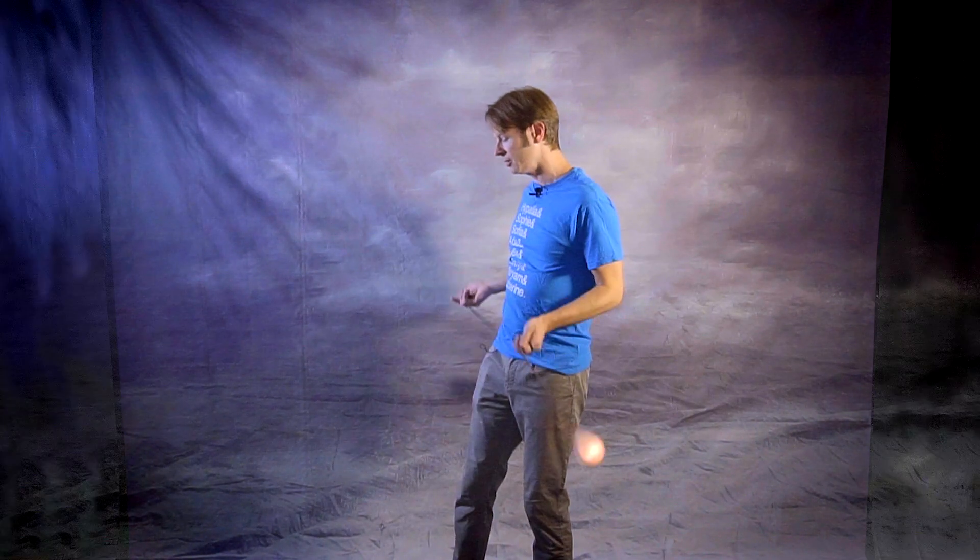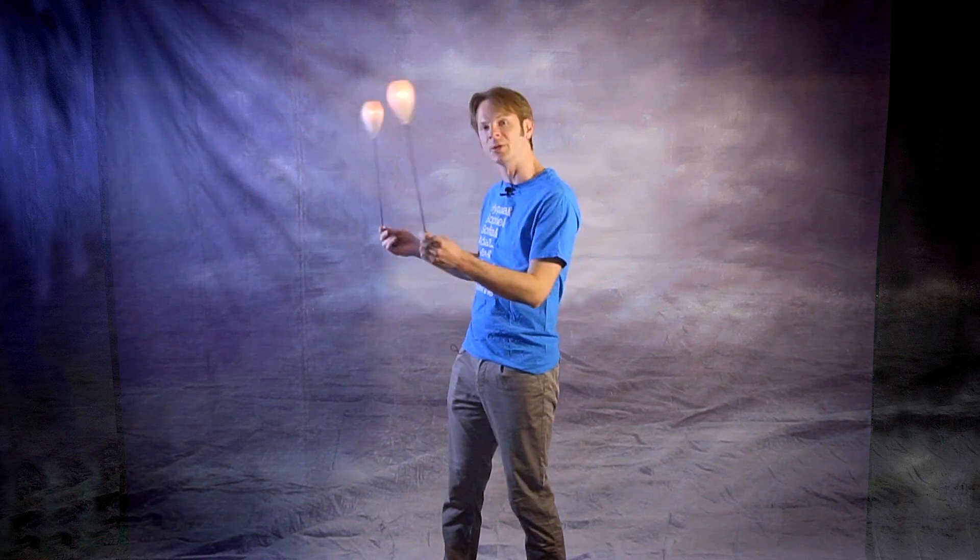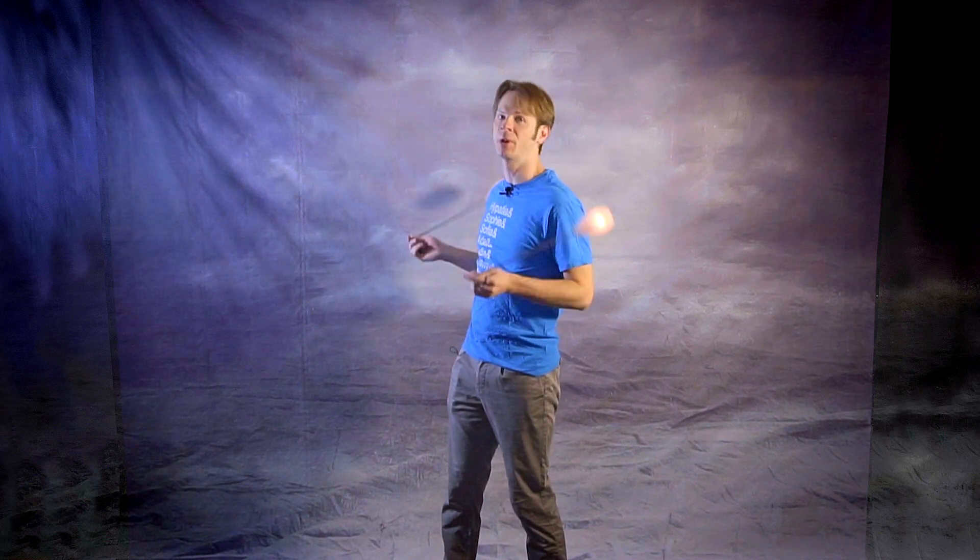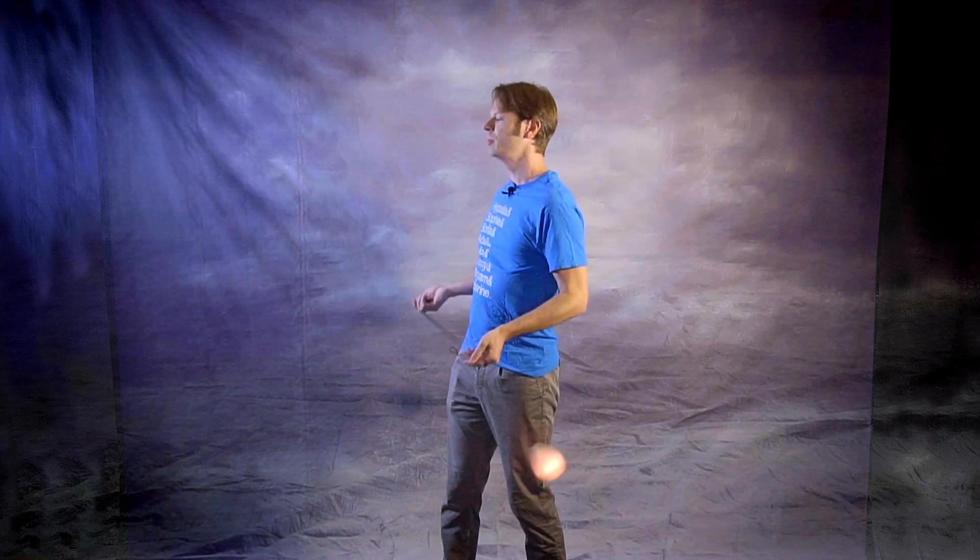So to start off with we just want to get those poi spinning forwards at our side and together same. This is just the standard position for a real turn that everybody starts with when they first get into poi spinning. We want to do one, two beats here...